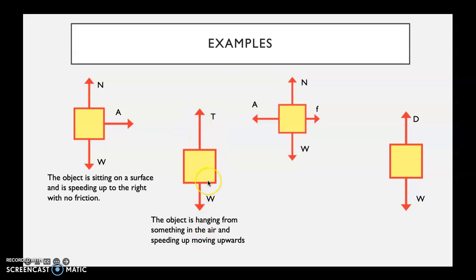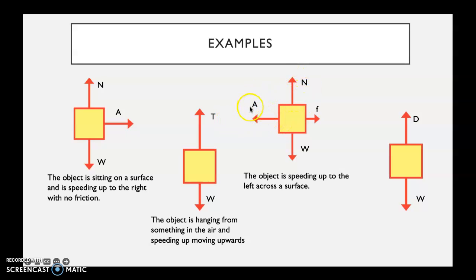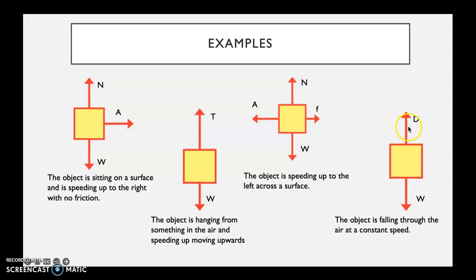For the second example, with labels for tension and weight, the object is hanging in the air because there is no normal force. Technically, there could be two representations: it is either speeding up and moving up, or slowing down while moving down. For the third, the object is speeding up to the left across the surface — normal force confirms it's on a surface, and applied force is greater than friction. The last example shows an object falling through air at constant speed, because drag is always opposite to motion and the arrows are equal in size, so the forces are balanced.